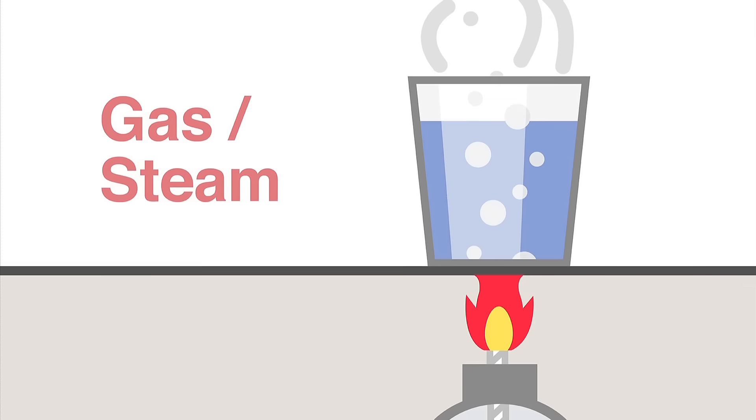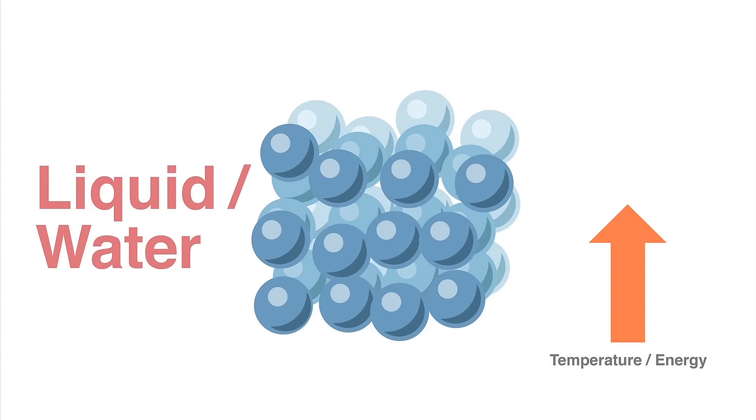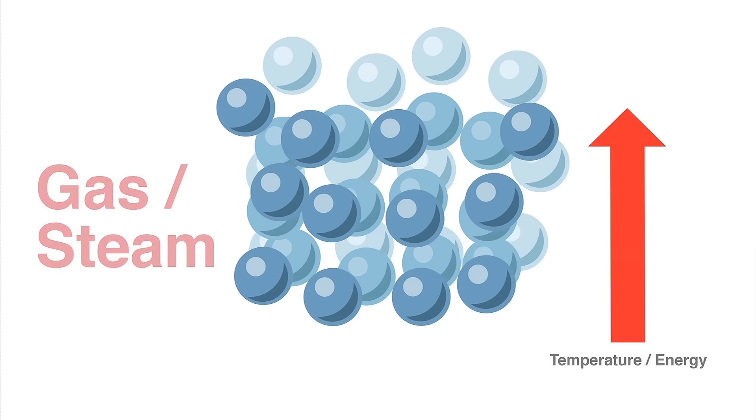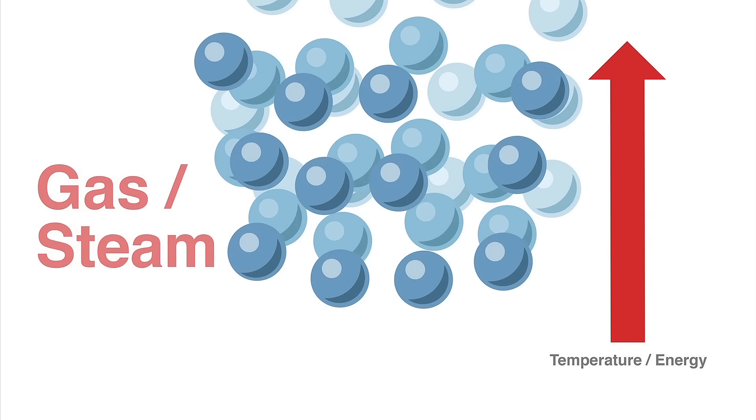The difference between these states is their energy. When you add energy to ice in the form of heat, the ice melts and forms water. If you add more energy, the water vaporizes and becomes steam. From ice to water to steam. But what happens if you add even more energy to the steam? A lot more.